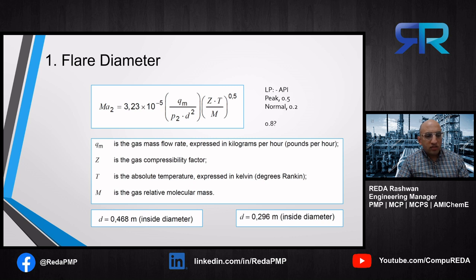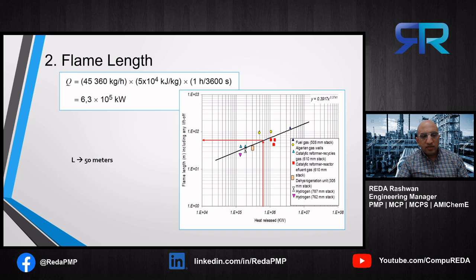Using this equation, we calculated the inside diameter twice: once for Mach number 0.2 and once for Mach number 0.5. The second step is to calculate the flame length, done using a simple graph. We enter the graph with the amount of heat released, hit the line, and get the corresponding flame length. The amount of heat released is calculated as the mass flow rate times the heating value, adjusted to kilowatts. From the graph, the flame length equals 50 meters.